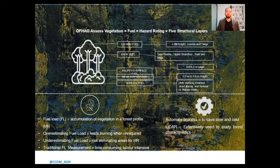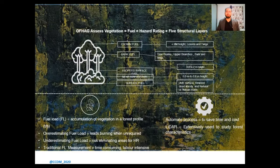One of the aspects to be considered is the fuel load to assess the hazard score. Fuel load is the accumulation of vegetation in a forest profile, measured in tons per hectare. Underestimating the fuel load leads to low estimates of bushfire risk, eliminating areas for hazard reduction burn and leaving properties underprepared. Overestimating leads to burning where it is unrequired, which has environmental and logistical implications. The traditional method of measuring fuel load involves cutting the vegetation, oven drying it, and weighing it — a time-consuming, labor-intensive, and costly process. This is why it becomes increasingly important to investigate automatic approaches to acquire fuel load data.